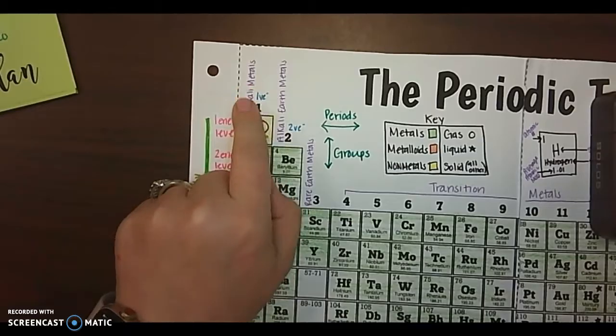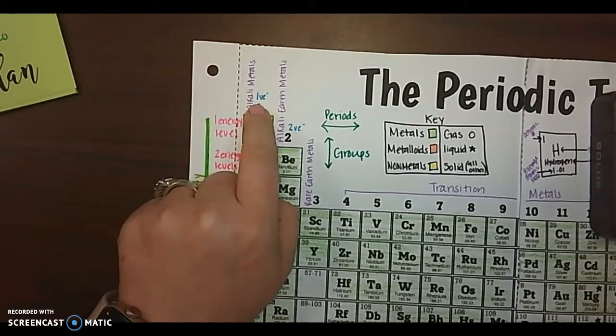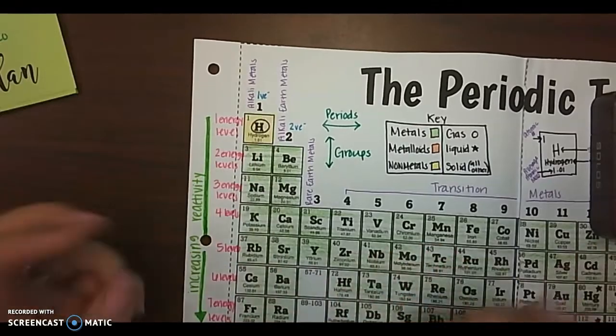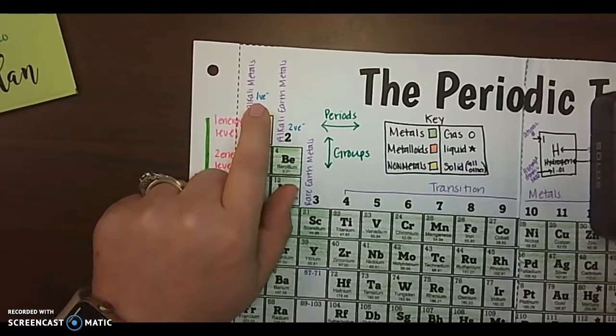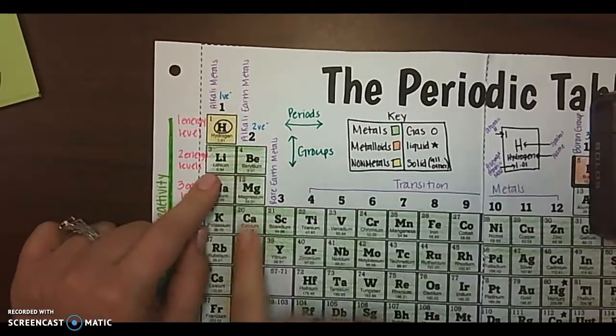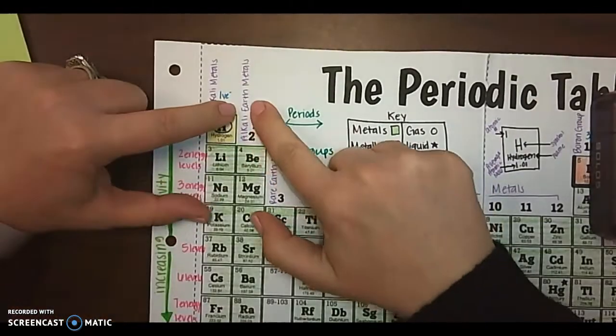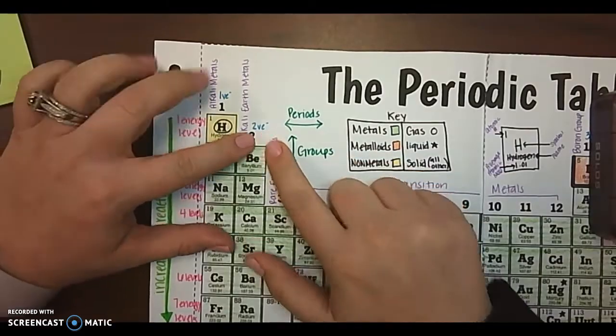So that means the electrons in the outermost ring, there's only one. Now there may be multiple rings, but that one valence electron is all it has. Group two, they're called the alkali earth metals and they have two valence electrons.